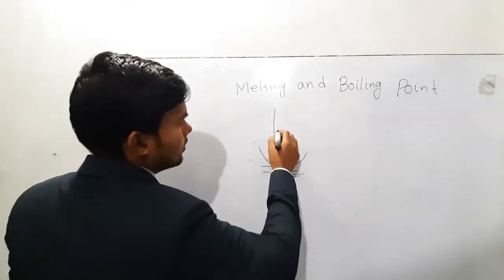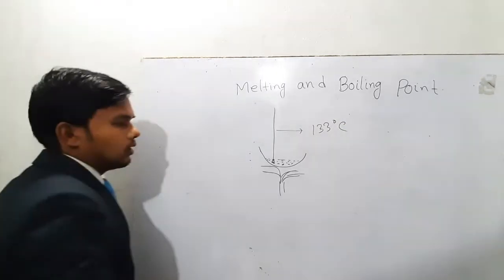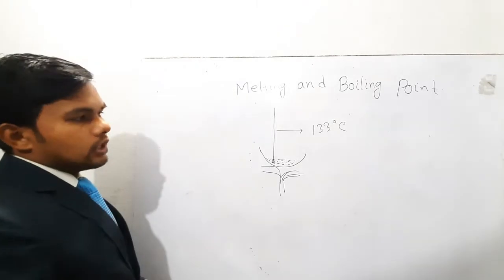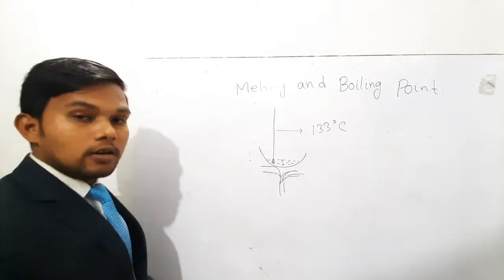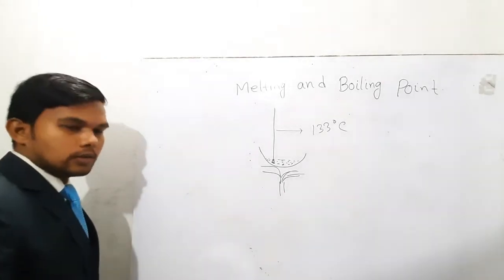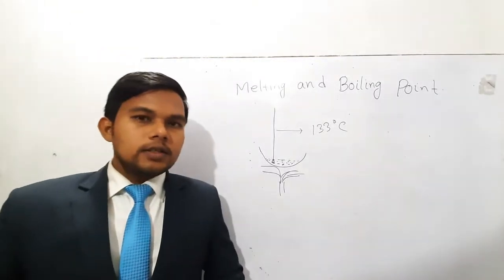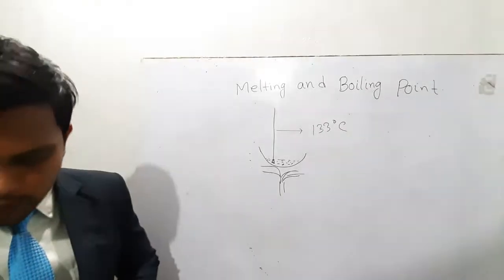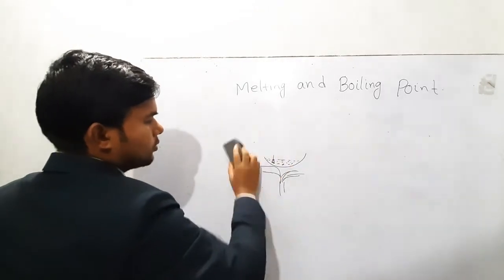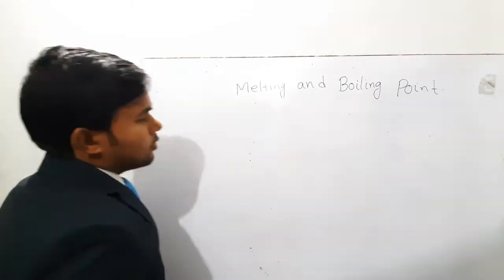If you observe the temperature closely, you will see that at 133 degrees Celsius the urea starts to melt. This is the melting point of urea — the temperature at which a solid substance just starts to melt, not completely melt. The melting point of pure urea is 133°C. But if we take an impure substance instead, what will happen?